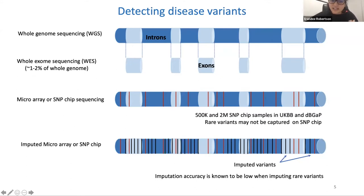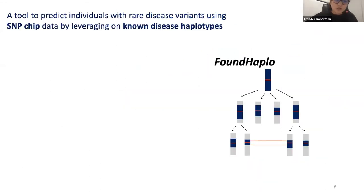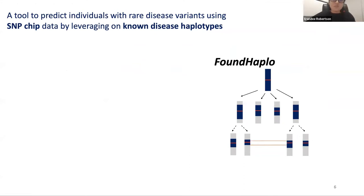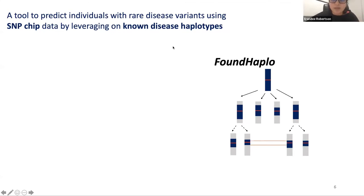Since WGS is expensive, and variants not in coding regions may not be on SNP chip and are hard to impute accurately, we propose our tool FoundHaplo, which uses commonly available SNP chip data to predict individuals with rare disease variants with increased accuracy by leveraging on disease haplotypes. The usage of SNP chip data makes this tool widely applicable.